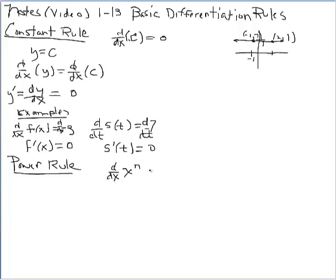Bringing in the derivative operator d over dx applied to x raised to n, two operations must be performed. First, take the exponent n and multiply it by the coefficient on x — currently 1, so the product is n. Then keep the base of x and reduce the exponent by one whole. So the power rule involves multiplication and then subtracting 1 from the exponent.